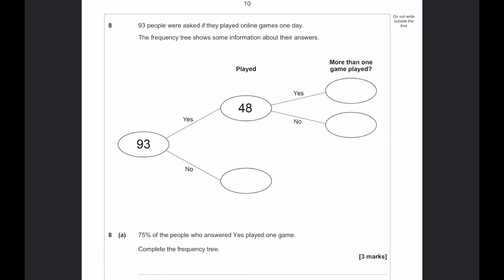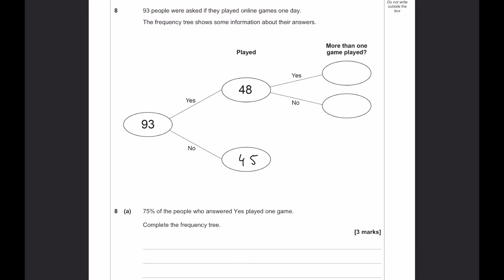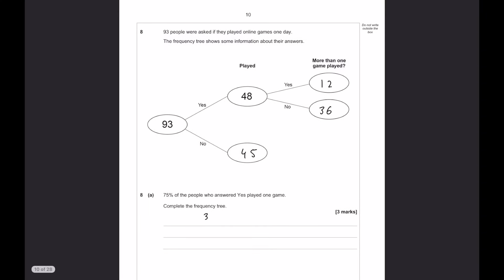Complete the boxes using a square and a prime. A square number in this case could be 36. A prime number is 2. So, 36 and 2. Again, play around with those. Work them out for yourself. I'm sure there are other options. 93 people were asked if they play online games one day. The frequency trees show the answers. So, 93 to 48. That means that this one is going to be 45.